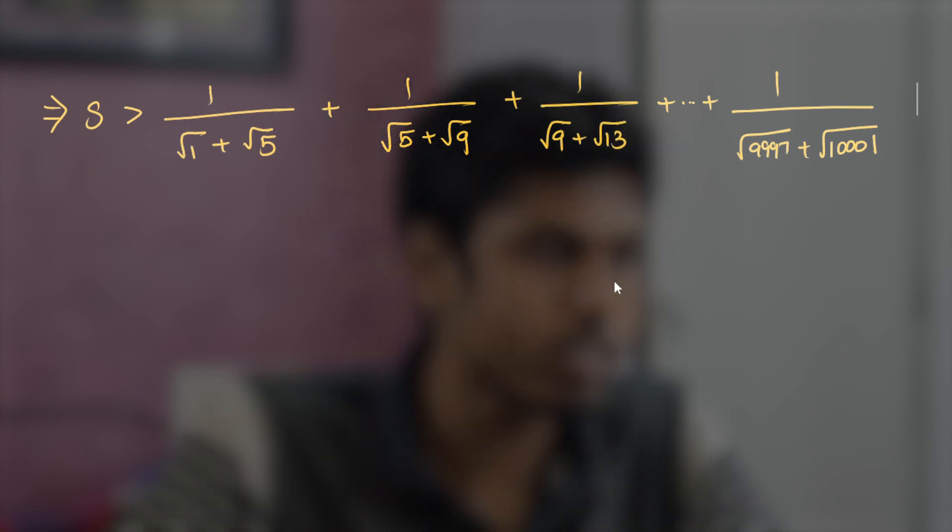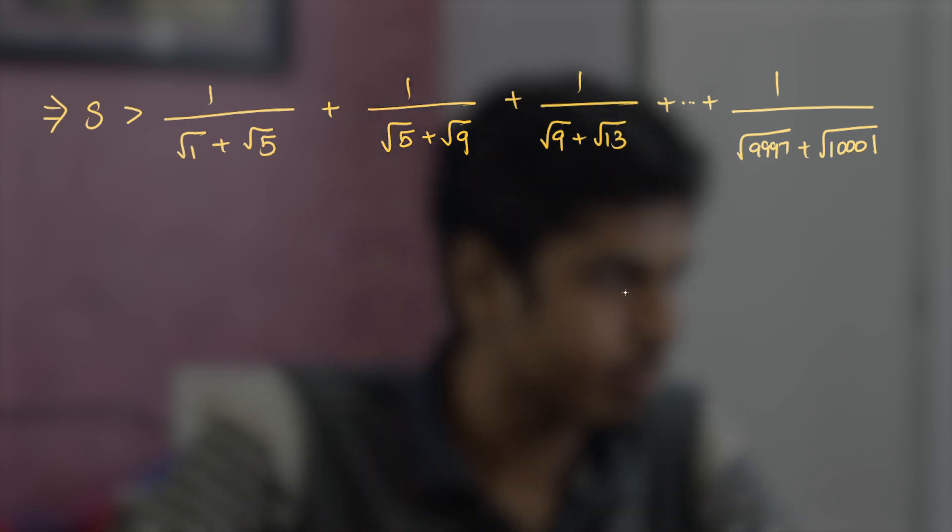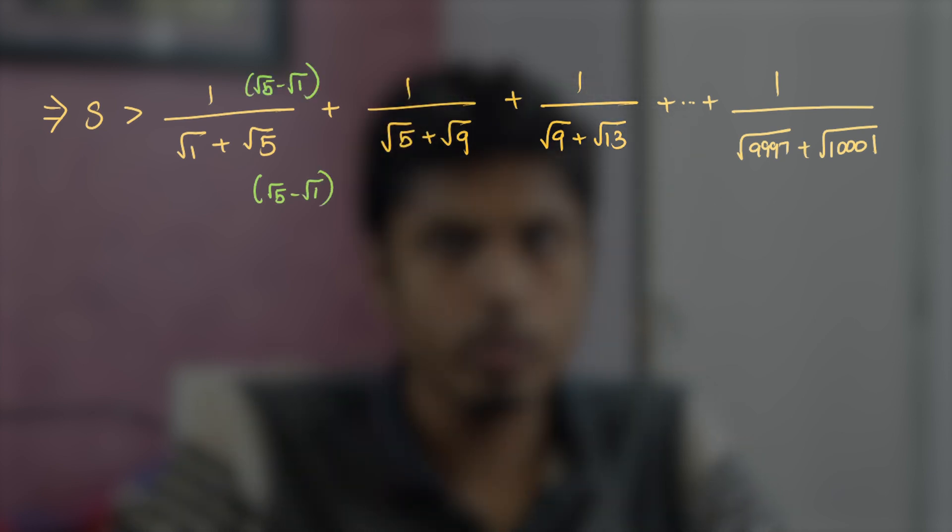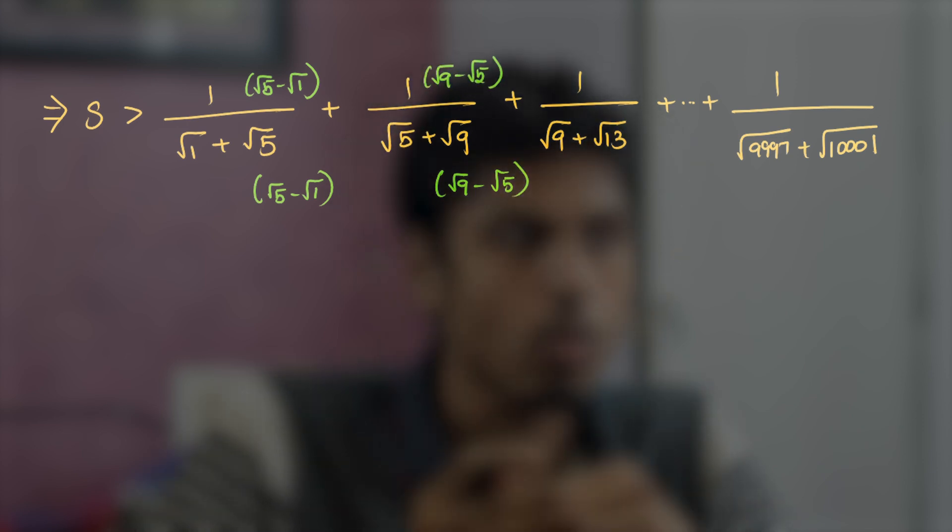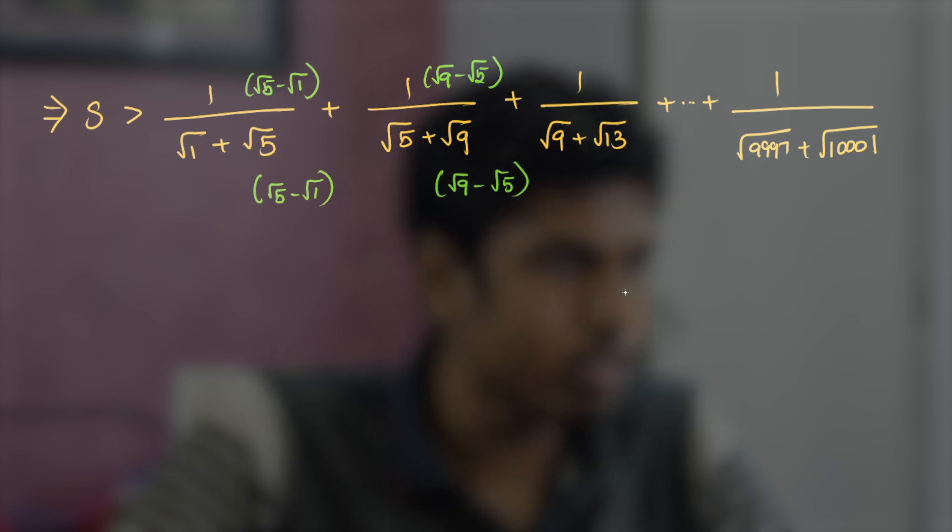We rationalize the denominator by multiplying root 5 minus root 1 with both numerator and denominator. For the second term, we multiply root 9 minus root 5. This rationalizes the denominator and makes all the denominators uniform.